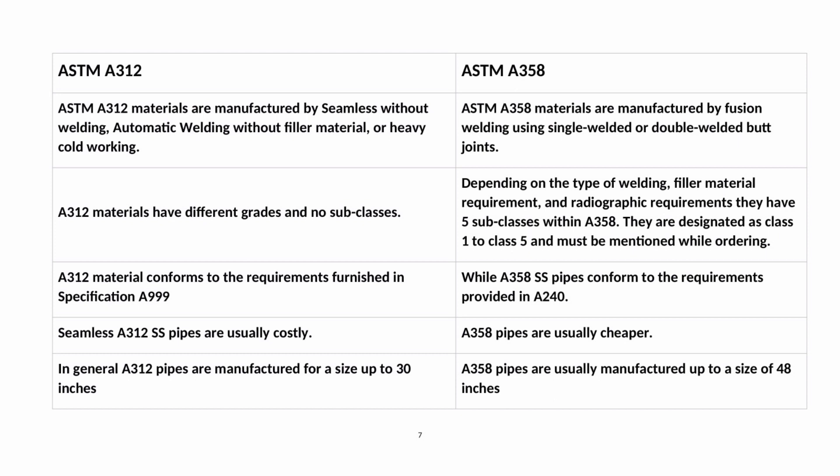A312 materials have different grades and no subclasses. Depending on the type of welding, filler material requirement, and radiographic requirements, A358 has five subclasses. They are designated as class 1 to class 5 and must be mentioned while ordering.